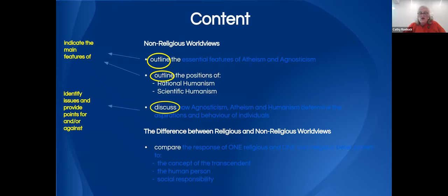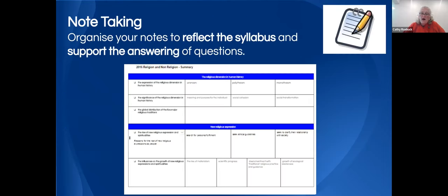We compare religious and non-religious worldviews under the headings of the concept of the transcendent, the human person, and social responsibility. I would suggest students use concise notes — perhaps a spreadsheet or table — that condenses all their textbook and class notes down to one or two pages with key words that jog memory. There's a tremendous amount of content in religion and non-religion.